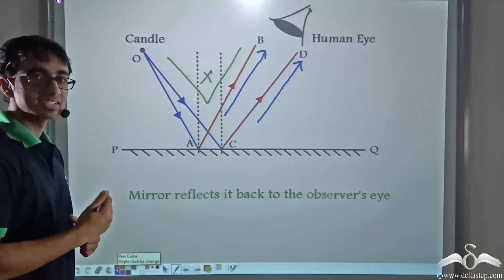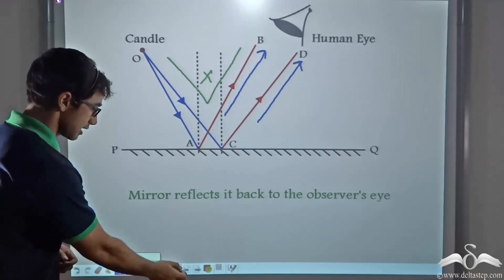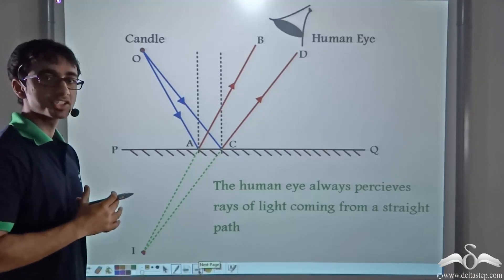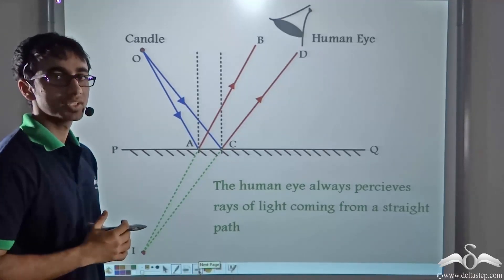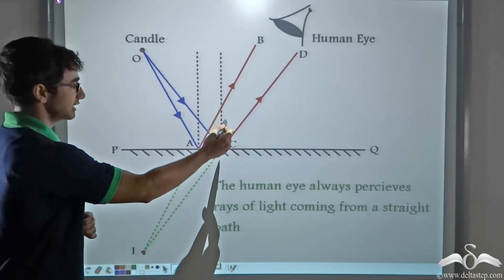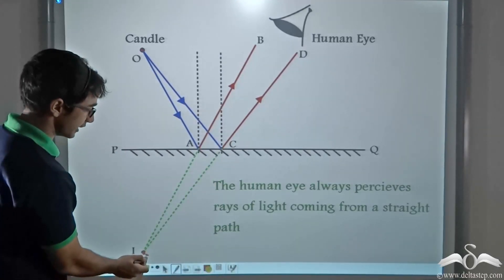So how does the human eye see the image? The human eye always perceives the image to be coming from a straight line. That is the human eye perceives that the image is at this point.